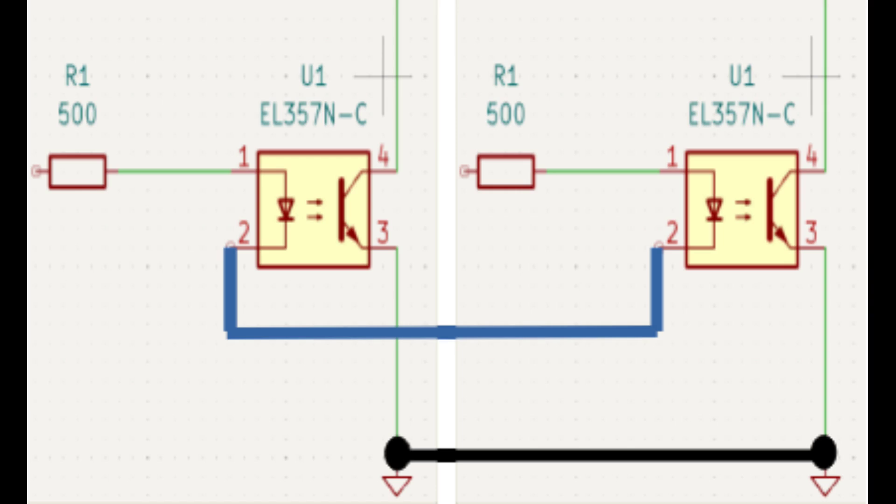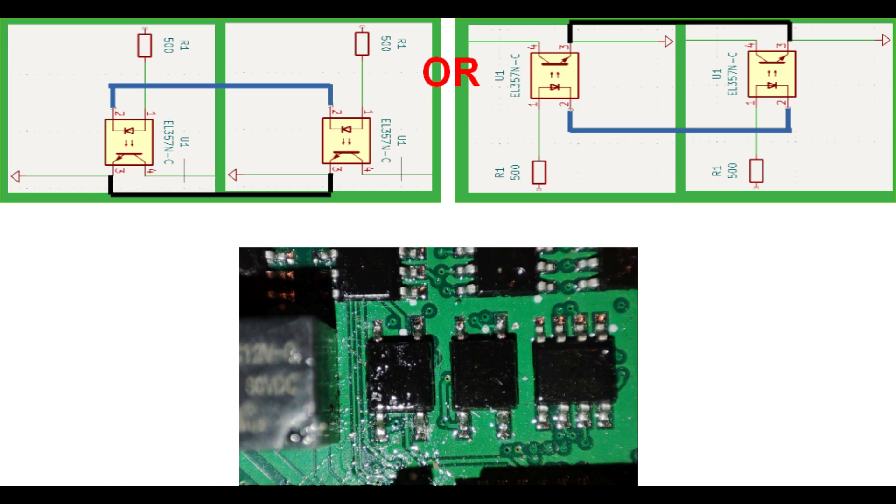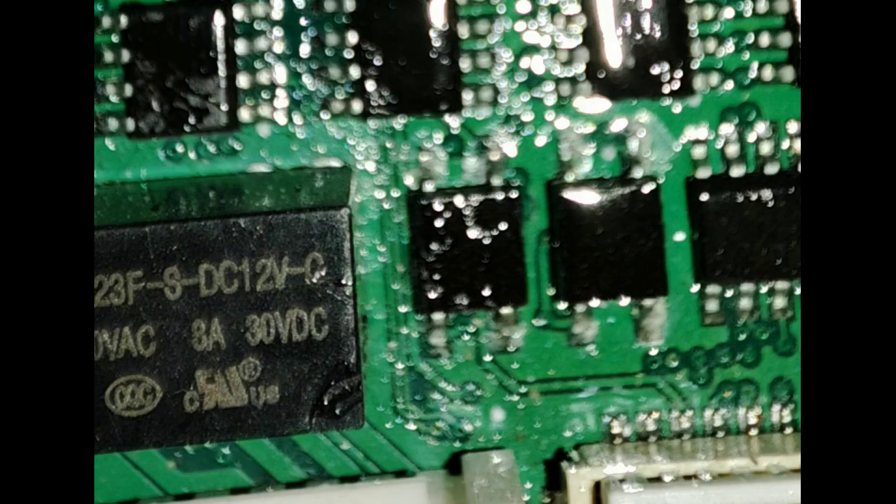Before starting, we first need to figure out which pins are what, so we can orient the replacement correctly. Normally pin 1 on ICs is indicated with a small dot next to it on the casing, but due to the coating, which I had not yet removed at this point, this was impossible to see. However, we know that pins 2 and 3 on the schematic of both optocouplers are paired together. I have rotated the schematic to match the two possible configurations on the board. So with a quick continuity test, it is possible to determine the orientation.